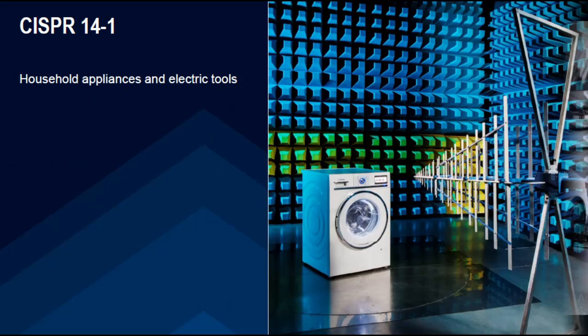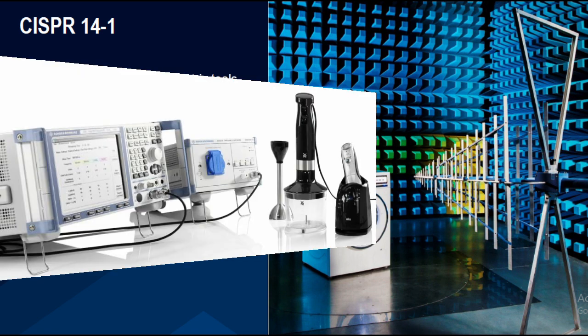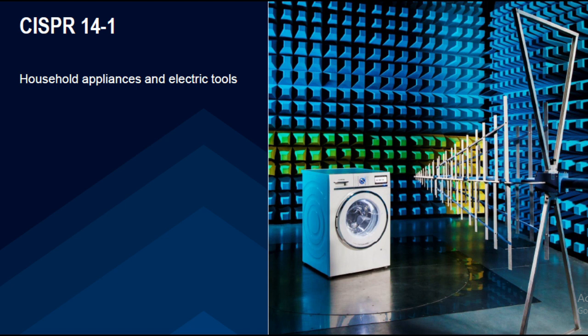CISPR 14-1 covers electromagnetic compatibility requirements for household appliances, electric tools, and similar apparatus. Its scope covers appliances whose main functions are performed by a motor, switching, or regulating device. Amendment 8-2 added induction cooking appliances. Excluded are apparatus covered by other CISPR standards, multi-function equipment, semiconductor regulation control of more than 25A per phase, and stand-alone power supplies.